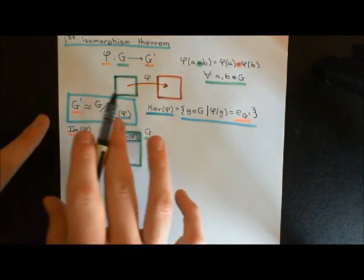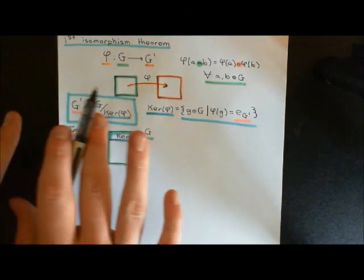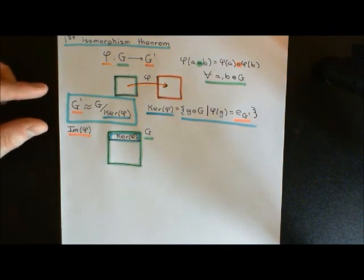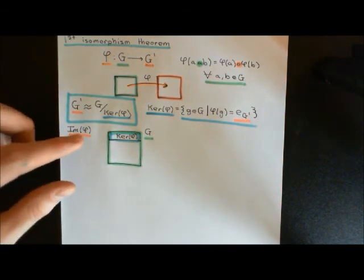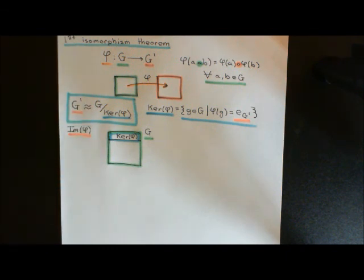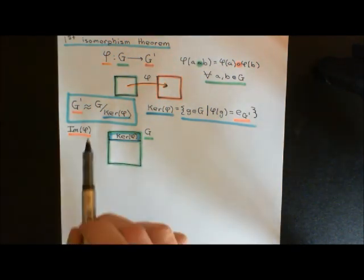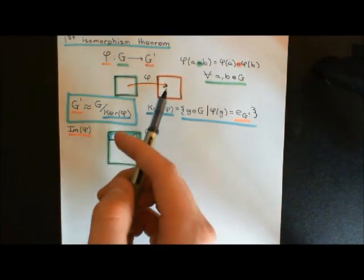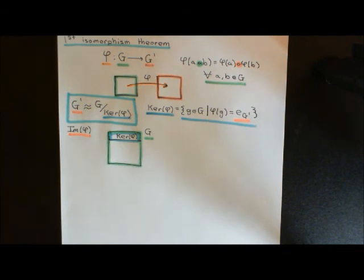To get a better understanding of the first isomorphism theorem, I want to think about what the right-hand side actually is. What we know is that the kernel of a homomorphism is always a normal subgroup of the domain group G. So in principle we can form the quotient group of G by the kernel of the homomorphism. Let's tackle this right-hand side first, and then we'll understand why it's so related to the codomain group.